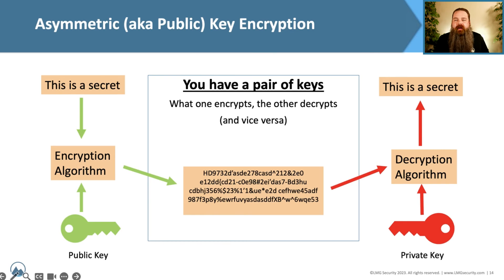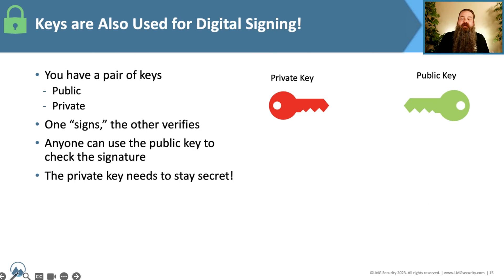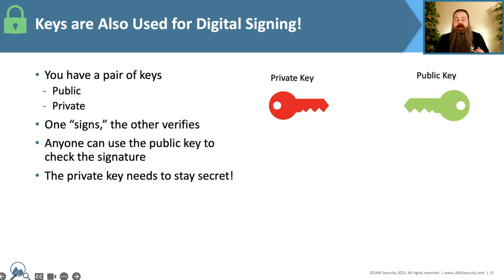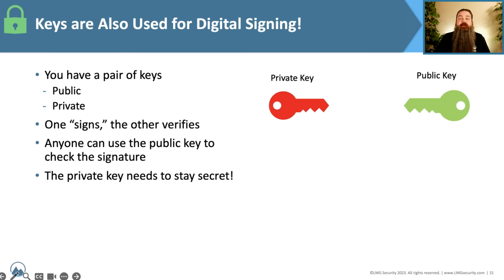We also use the same kind of concept for digital signing — this is verification that something like an email was actually sent from who you think it was sent from. You have two things: a private key and a public key. One signs, the other verifies. So if I'm sending you an email, I can sign that email with my private key, which you don't know. Once that email is delivered to your system, if you have my public key, you can verify that it works with my private key, and then you know the email did actually come from me.